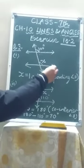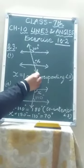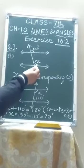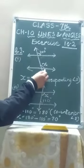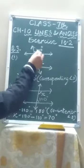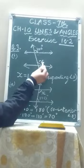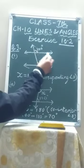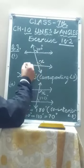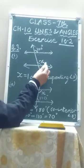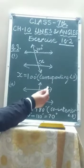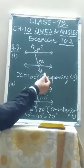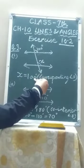These are two parallel lines and this is the transversal cutting these two lines. One angle is 100 degrees and the other angle is x. You have to find the value of x. These two angles lie on the same side of the transversal and both are on the upper side of their respective lines — 100 degrees on the upper side of the first line, x on the upper side of the second line. These types of angles are called corresponding angles, and corresponding angles are always equal. That means x equals 100 degrees.